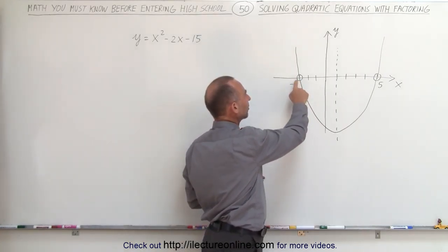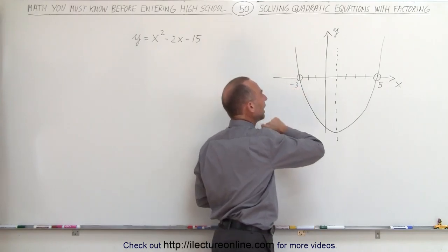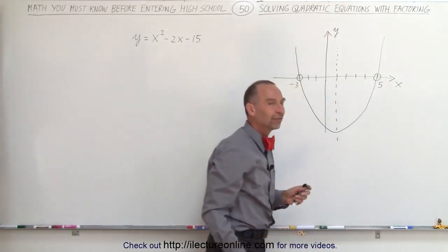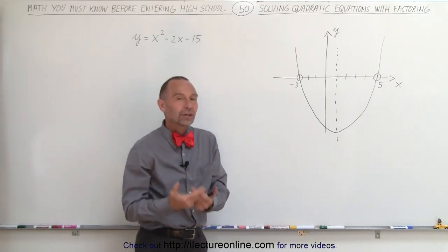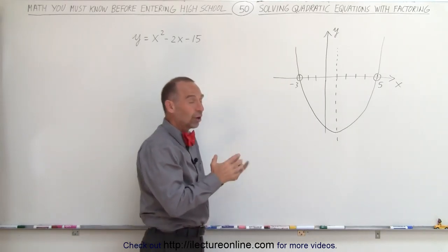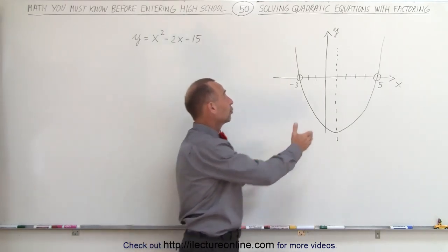But here we can see that it crosses the x-axis at x = -3 and at x = 5. Finding those two points is what we call solving the quadratic equation. When we try to solve an equation, it's finding the points where the graph crosses the x-axis.